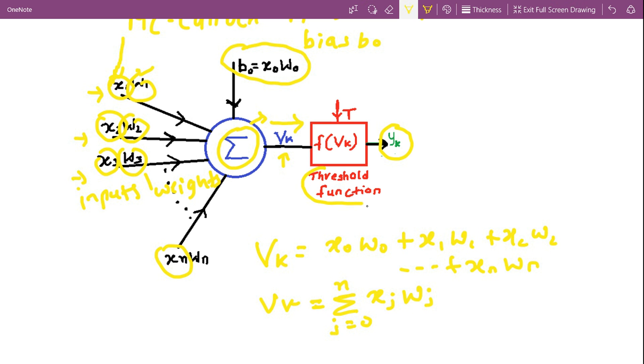So the threshold function, how it works is, it has a certain value called threshold value. If input vk is greater than or equal to threshold value, then output yk will be equal to 1. Else, the output will be equal to 0.